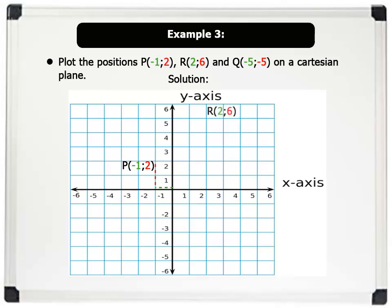To plot position R (2, 6), we start from the origin, move right along the x-axis to 2. Then, we move up the y-axis to 6.